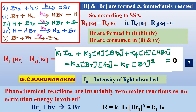Since photochemical reactions are invariably zero-order with respect to the reactant concentration — as no activation energy is involved and collision theory does not apply — [Br₂]⁰ = 1. Therefore: k₁Iₐ + k₃[H][Br₂] + k₄[H][HBr] − k₂[Br][H₂] − k₅[Br]² = 0. Here, Iₐ is the intensity of light absorbed. This is equation 2.